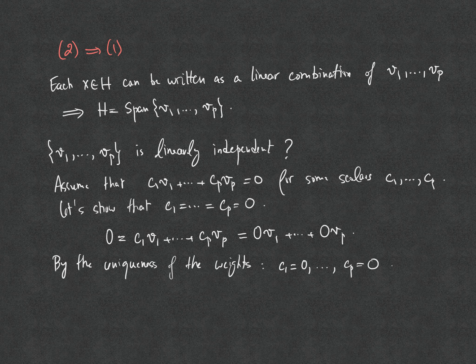In conclusion, V1...VP span the subspace H and V1...VP are linearly independent, which means V1...VP form a basis for the subspace H.